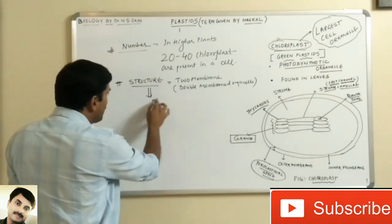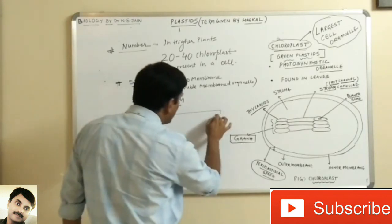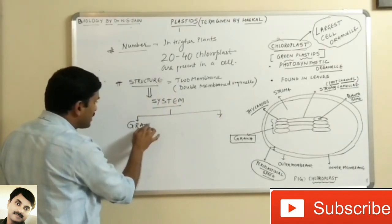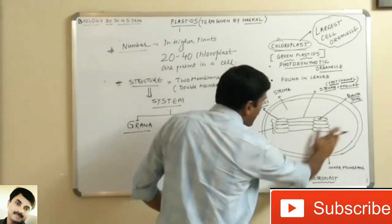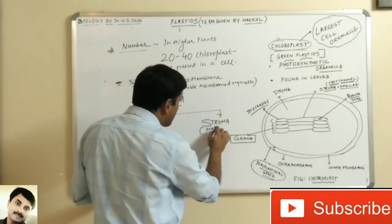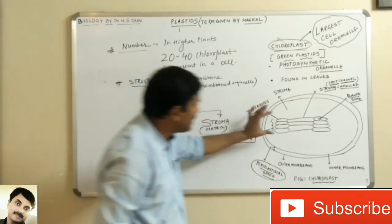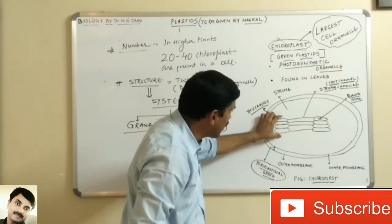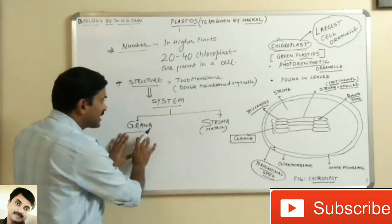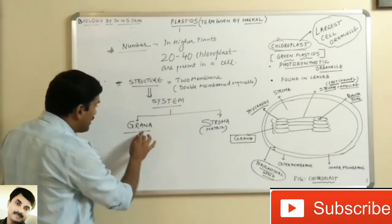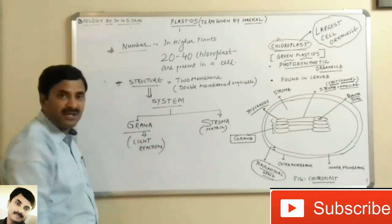Inside the chloroplast there are two systems: one is known as grana and the other is called stroma. The stroma forms the matrix of the chloroplast. The structures that look just like a pile of coins are the grana. These are the two systems found in the chloroplast.